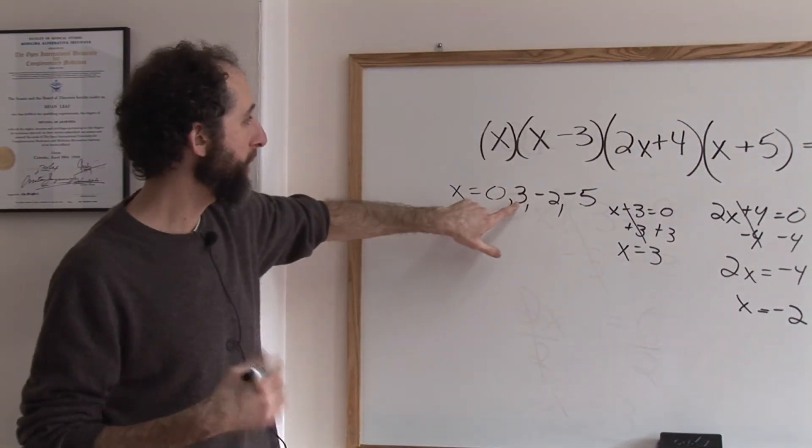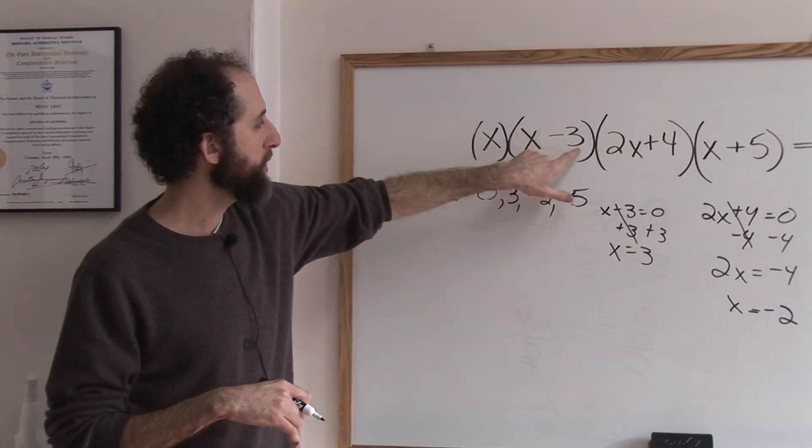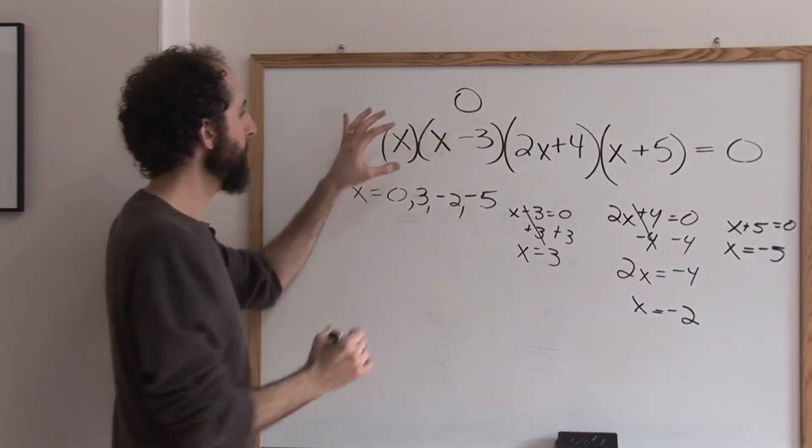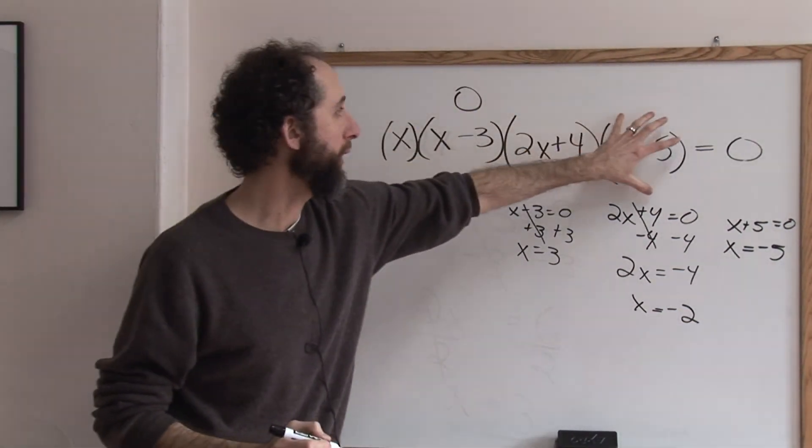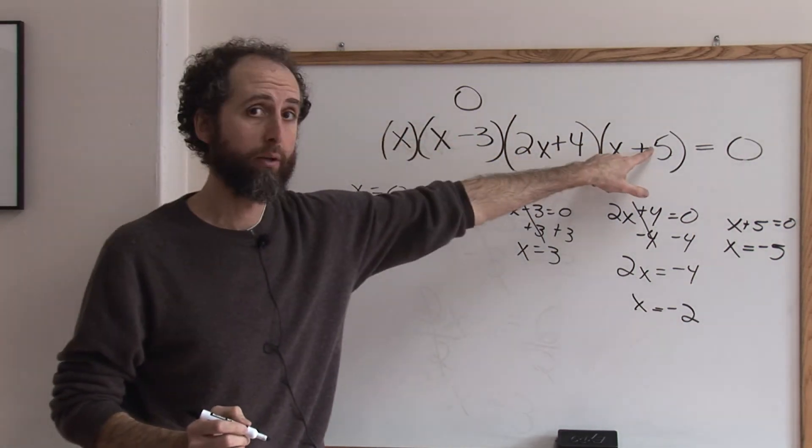And that's because, one last time, if you plug in three, for example, three minus three is zero. So this expression will equal zero. It doesn't matter what these guys are going to wind up equaling, because zero times anything is zero.